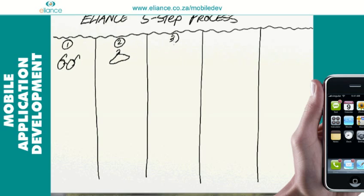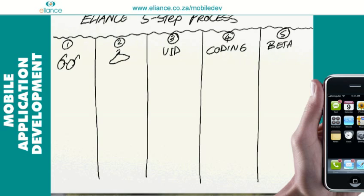The third step is user interface design — how your application will look to the end user and how your admin panel is going to look to the application admin. The fourth step is coding, which is creating a working first draft of your application. Our final step is beta testing, where we really get the application ready for public use.